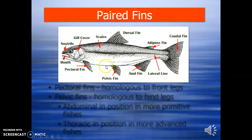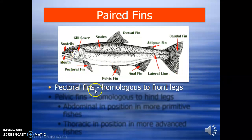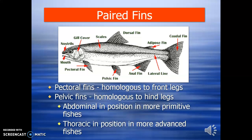The pectoral fins are homologous to the front legs — similar to the forelimbs in human beings. In the sense of evolution, the forelimbs are said to have originated from the pectoral fins. Pelvic fins are homologous to hind legs. They are in an abdominal position in more primitive fishes, and in a thoracic position in more advanced fishes.